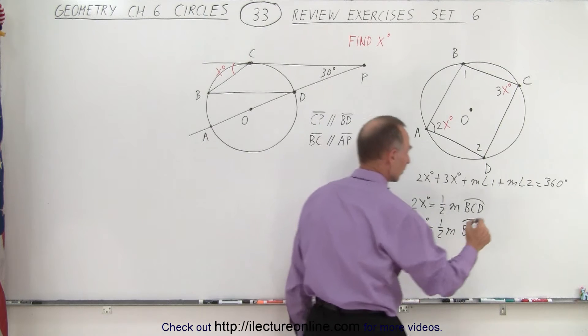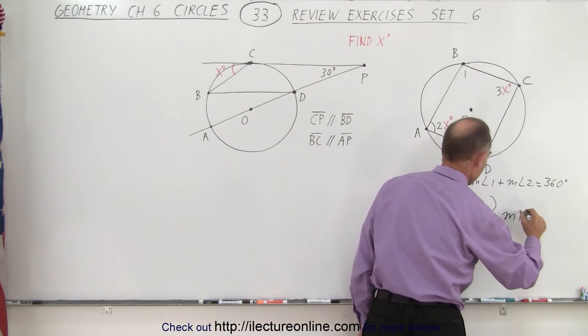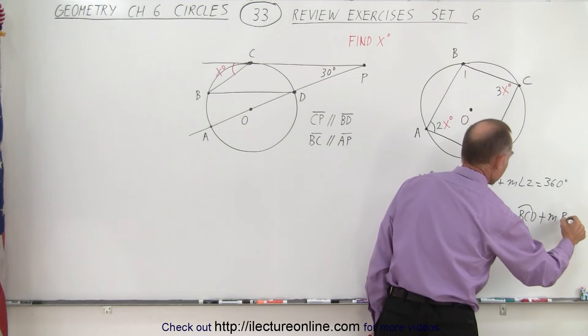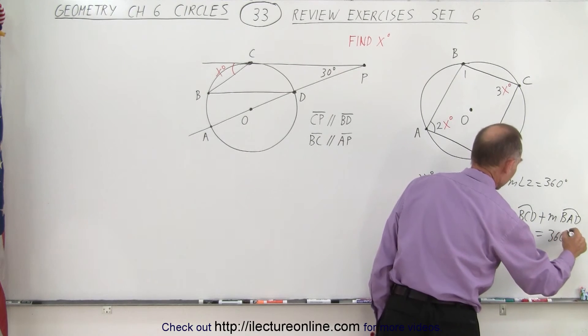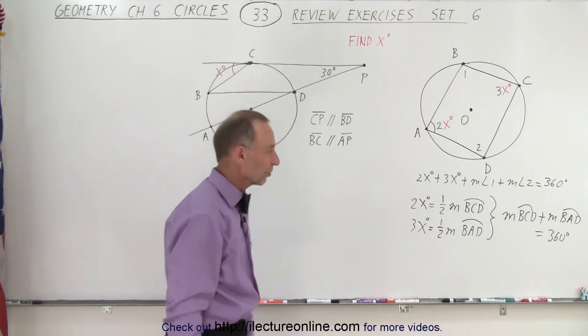And then we can say that the measure from B, C, D plus the measure of B, A, D, that should add up to 360 degrees. Because that gives us the full circle. Now we have a way to solve the problem.